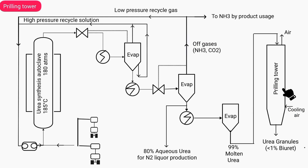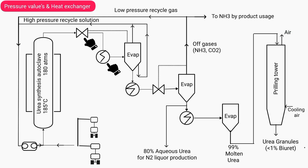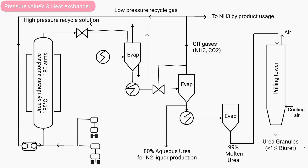This is called the prilling tower, in which urea is converted into a granulated state. These are called pressure valves and heat exchanger equipment. Through the pressure valve, the pressure of the gases flowing in the pipeline and the pressure inside the evaporator are maintained or controlled, and the temperature of the heat exchanger is also controlled. There is also a pump that transports the recycling solution and gas into the autoclave.